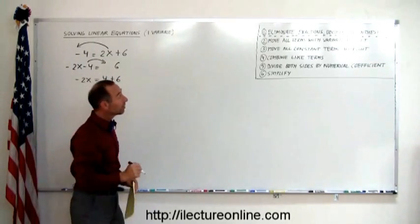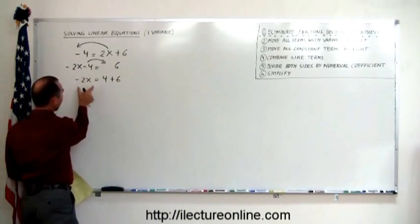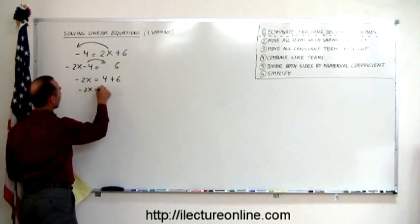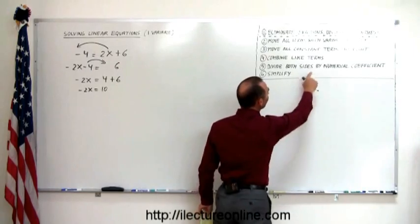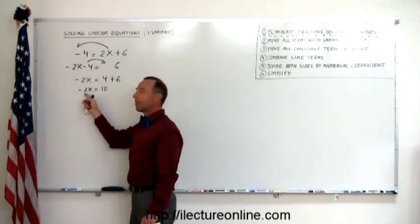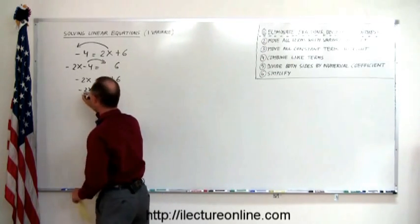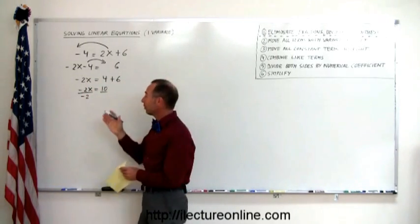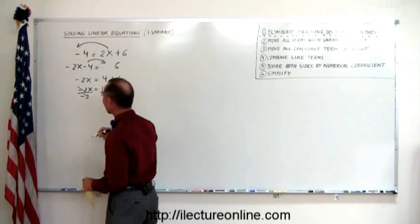The next step is to combine like terms. On the left side I only have one term; on the right side I have two, so I combine those: minus 2x equals 10. The next step says divide both sides by the numerical coefficient in front of the variable. In front of x we have a minus 2 — that is the numerical coefficient of x — so we divide both sides by minus 2. Notice these two cancel.